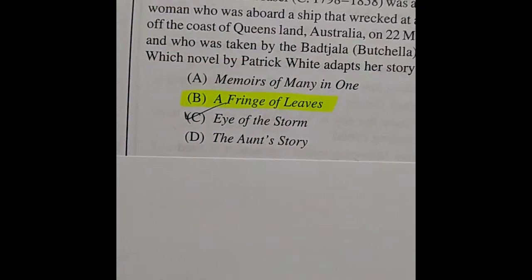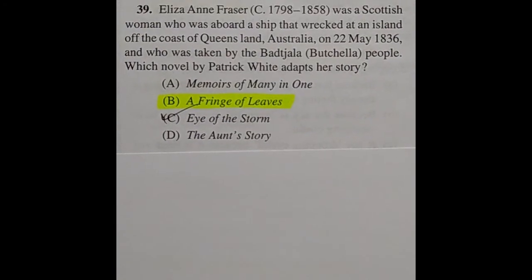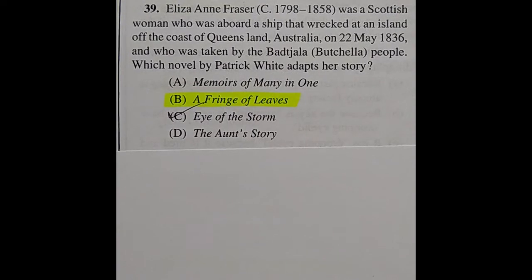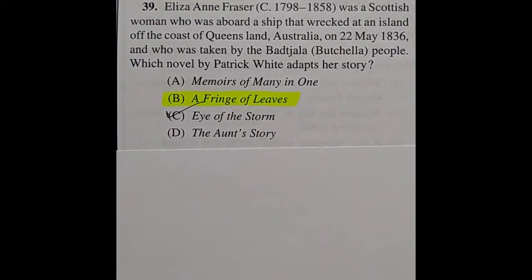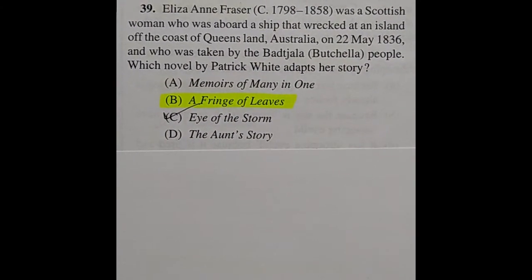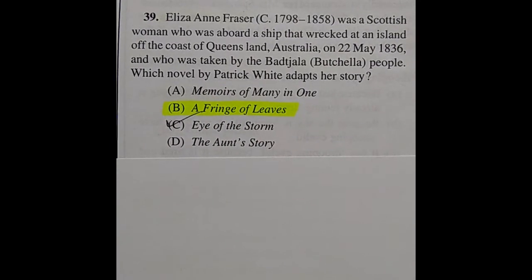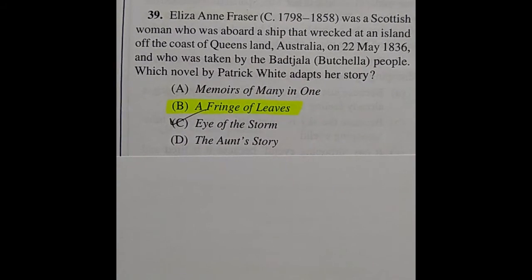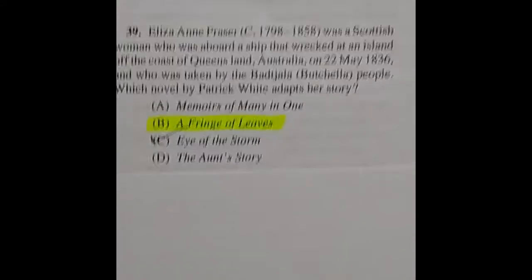Question 39: Eliza Anne Fraser (1798–1858) was a Scottish woman who was aboard a ship that wrecked at an island off the coast of Queensland, Australia, on 22 May 1836, and was taken by the Batjala people. Which novel by Patrick White adapts her story? The right answer is option B: A Fringe of Leaves.